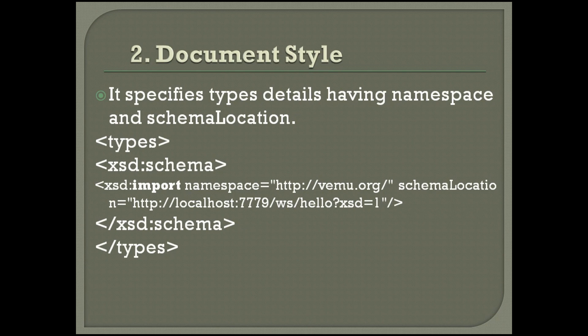The document style generated WSDL file has specified details with a namespace and location — schema locations. It has types — one is the XML Schema Definition (XSD), that is, a schema. We can also call it a database. The location is something like localhost colon 3779 as a port number, which it uses.